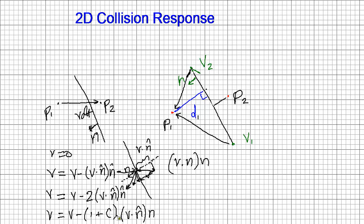So there's several responses you can do. This is a more general response with the coefficient there. But this is what we want for just pure elastic collision, V equals V minus 2, V dot N times N.